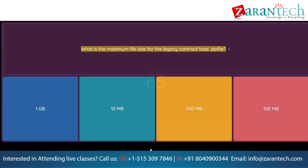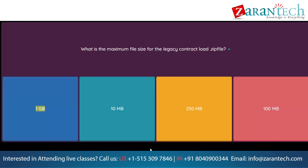Question: What is the maximum file size for the legacy contract load .zip file? Option 1: 1 GB. Option 2: 10 MB. Option 3: 250 MB. Option 4: 100 MB.